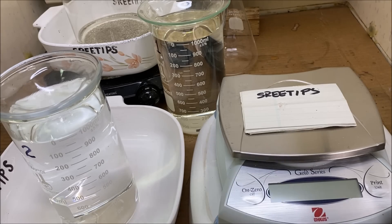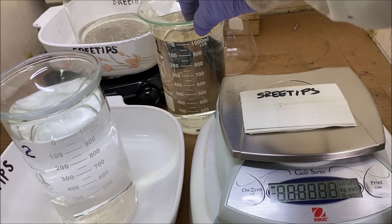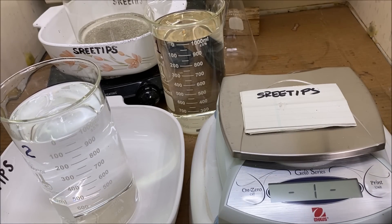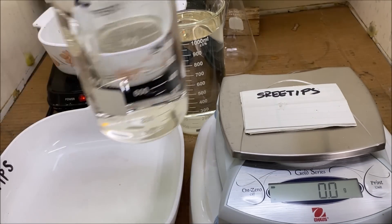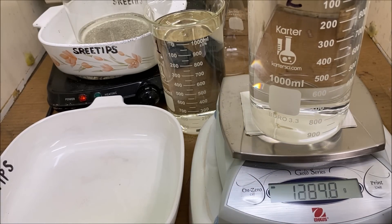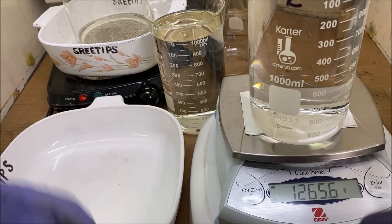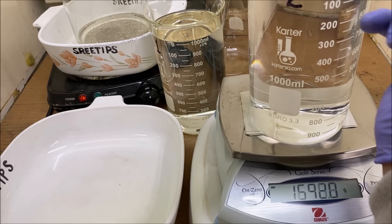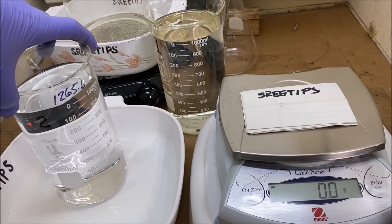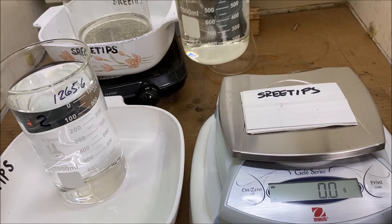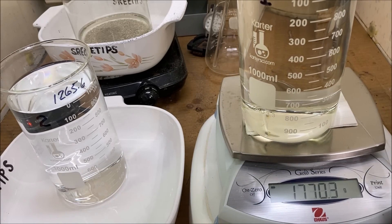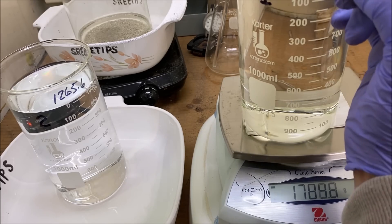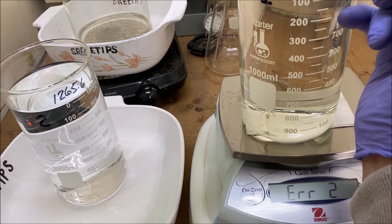Okay, to be totally accurate I should have measured the empty weight of each beaker, but this should be enough to give us an idea of the different density between the distilled water. Let's put that on the scale here. That's 1265.6 grams. Now let's measure the electrolyte. That's 1784.8 grams.